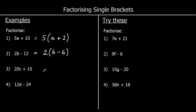Question 3: 20c plus 10. What can we take out of 20c and 10? They are both in the 10 times table, so we take 10 outside the bracket. 10 times what would make 20c? 10 times 2c would make 20c. And 10 times what makes 10? 10 times 1 makes 10. So if we expanded this again: 10 times 2c is 20c and 10 times 1 is 10.